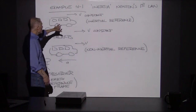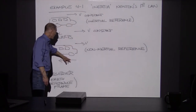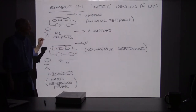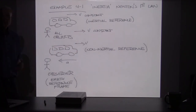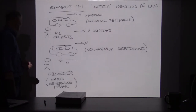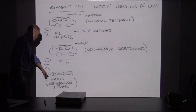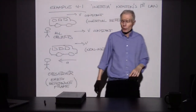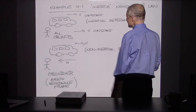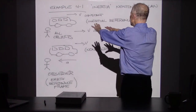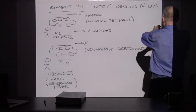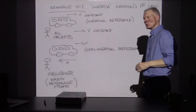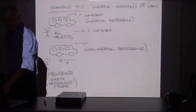When the bus was moving at constant velocity, it was an inertial reference frame. When it accelerates or decelerates, it's a non-inertial reference frame. The observer outside, in the Earth reference frame, watches the bus and backpacks go by, then the bus slows down while the backpacks continue to move until enough force brings them to a stop.